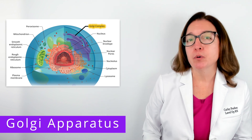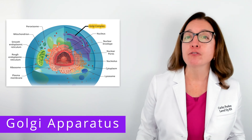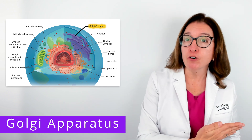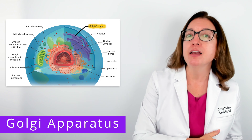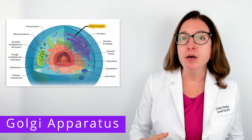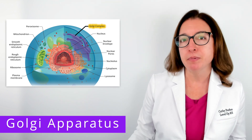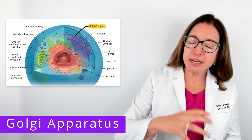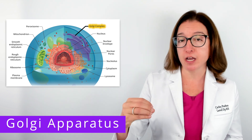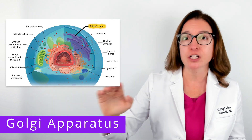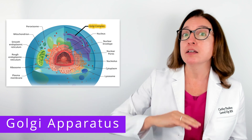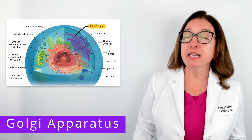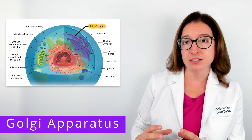Next, let's talk about the Golgi apparatus, which serves as the distribution center for the cell. The Golgi apparatus receives lipids and proteins from the endoplasmic reticulum and often adds carbohydrates to them, forming glycoproteins and glycolipids. Once these lipids or proteins have been modified, transport vesicles pinch off from the Golgi apparatus and travel to their final destination. Some will be secreted out of the cell, some will be incorporated into the plasma membrane, and in some cases those vesicles will become lysosomes.